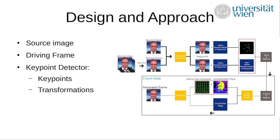The dense motion network generates information about which areas in the source image need to be moved. At the end of the generator, it reconstructs the original video frame by warping the source image and inpainting areas not visible in the source. Using optical flow, the generator knows how to warp the areas, and using the transformation mask we know which areas are affected. The occlusion map tells the generator which parts of the image need to be inpainted because they were not in the initial source image.